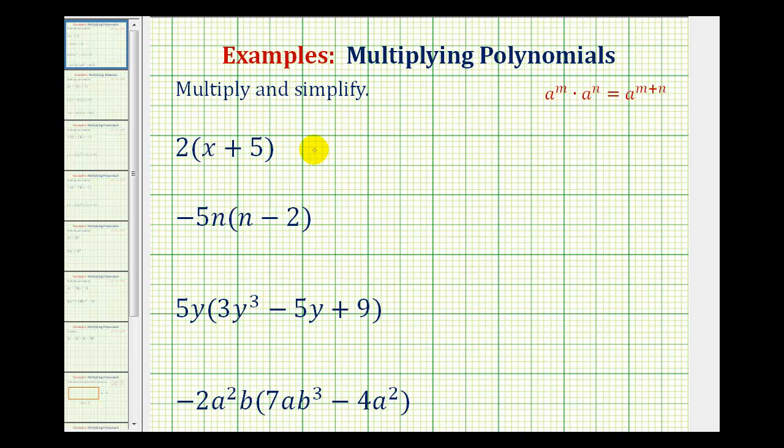To multiply a monomial and a polynomial, we use the distributive property, which is often referred to as multiplication across addition or subtraction.